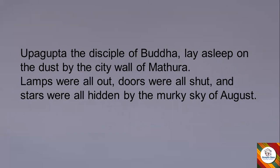Now let's read the poem stanza by stanza. First stanza: 'Upagupta, the disciple of Buddha, lay asleep on the dust by the city wall of Mathura. Lamps were all out, doors were all shut, and stars were all hidden in the murky sky of August.' Upagupta was sleeping on the dusty ground near the city wall of Mathura. All lamps were off, doors were shut as people had gone to sleep, and even the stars were hidden by the cloudy sky typical of August.